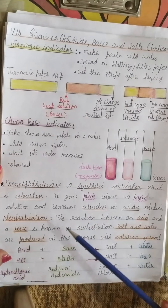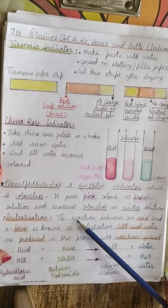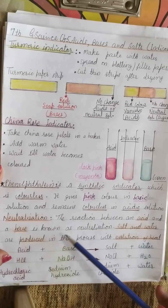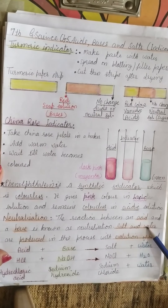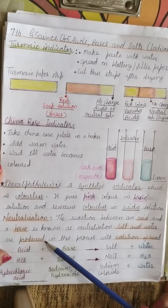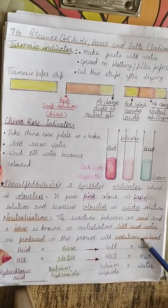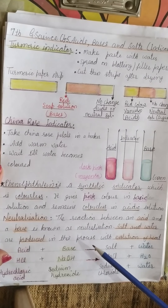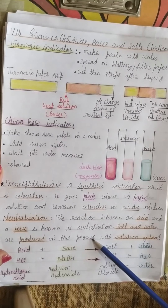Next, neutralization. The reaction between an acid and a base is known as neutralization. Salt and water are produced in this process with the evolution of heat. For example, if in a test tube you mix a small quantity of an acid and a base, and if you touch the test tube from outside, you will feel that it is slightly warm.